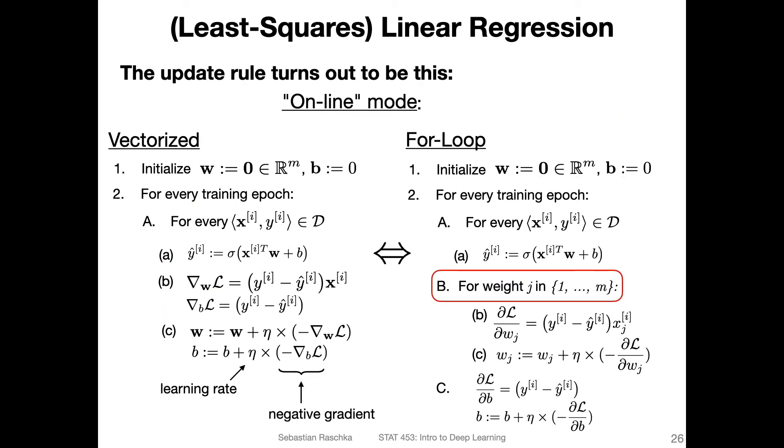On the left hand side, I showed you vectorized implementation of this linear regression online mode. Where we had vectors, so x here is a vector, for example, and the gradient is a vector. But we can also kind of unroll this using a for loop. This way, we don't need gradients, we can just talk about partial derivatives. In order to simplify this as a for loop, we would just look at one feature at a time or one weight at a time.